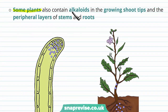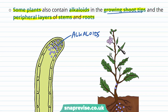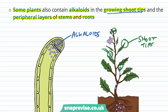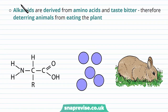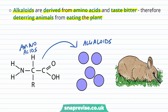Some plants also contain chemicals known as alkaloids in the growing shoot tips and the peripheral layers of the stems and roots. Alkaloids are derived from amino acids and taste very bitter, deterring animals from eating the plant. When an animal starts eating the plant it tastes the bitter alkaloids and is unlikely to continue, and may learn over time not to eat that species. Therefore the plant's chance of survival is increased.